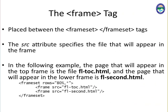The src attribute specifies the file that will appear in the frame. Here the frames are blank, but when we write the path of any source file, these frames will display images, figures, GIFs, or any video. So src indicates the source — the src attribute.